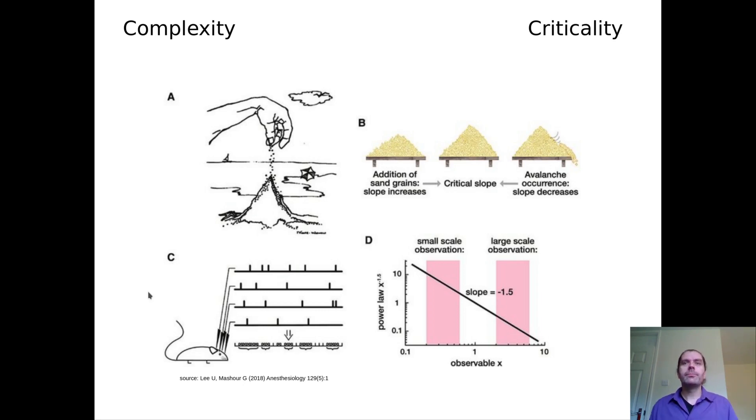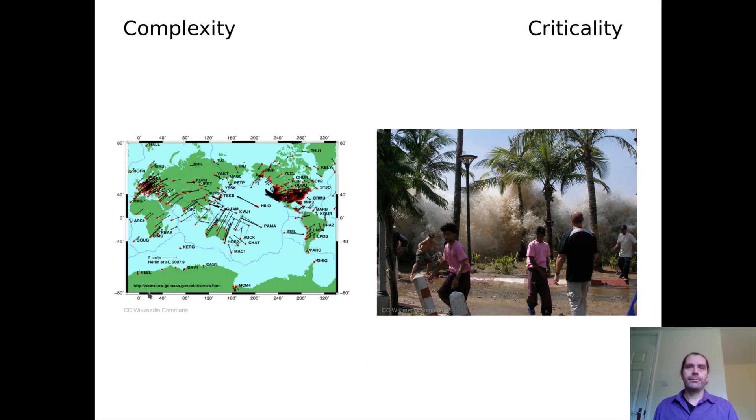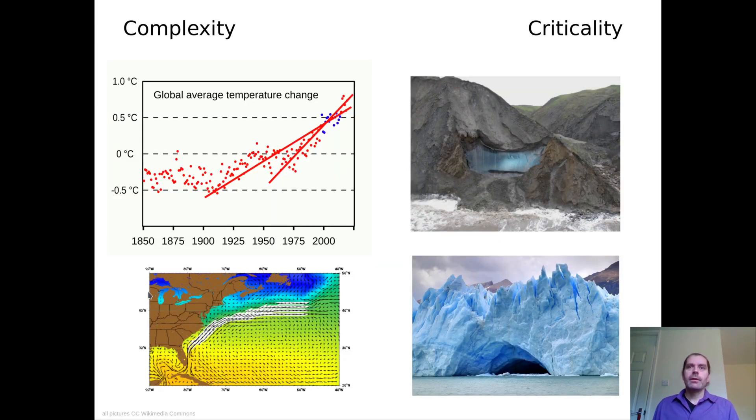As with chaos, when people started looking for it, it turned out that self-organized criticality is quite common in nature. A classical example are earthquakes. We have tension building up between tectonic plates that gets released in an earthquake. And magnitude as well as timing of earthquakes is essentially unpredictable. We can find general patterns, but when the next earthquake will occur and how bad it will be is very difficult to foresee. Solar flares show self-organized criticality. Climate change has some properties of self-organized criticality to it. There are parts of the system that might flip suddenly to a different state.